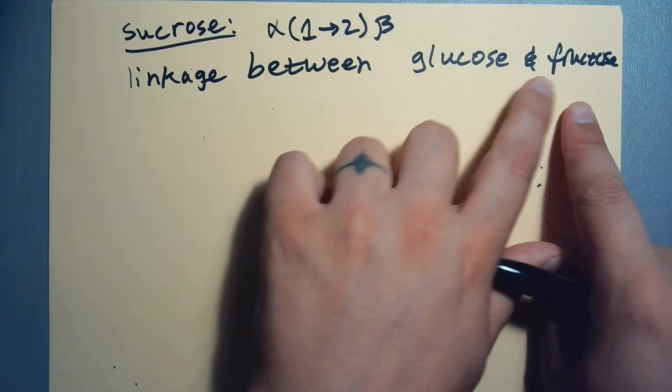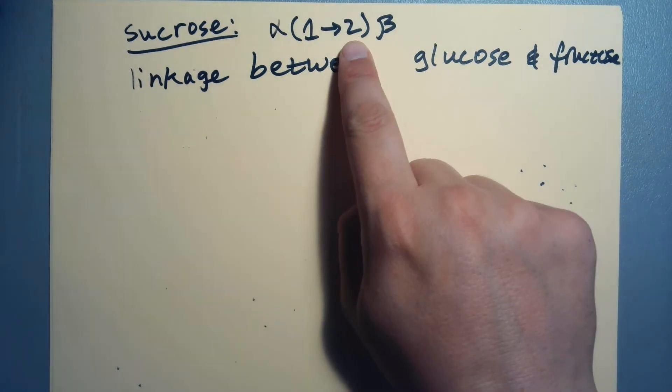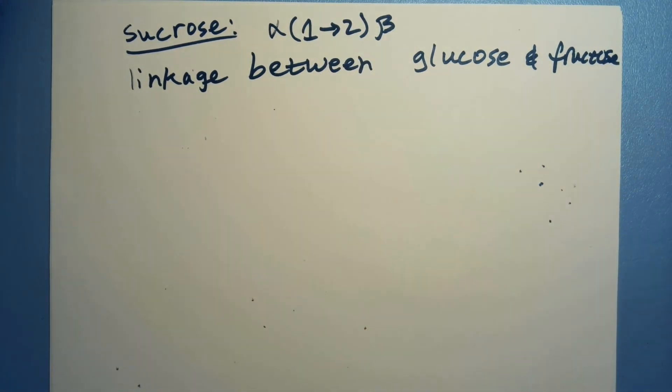So yeah, pause the video, take a shot. And then maybe you succeed. Maybe you meet terrific failure. Just great. Tremendous wave of failure. That's fine. We're going to go through it in a minute. Get a different marker that was dying on me. Alright. So what does this look like? Well, I've got to draw alpha glucose, right? It's got to be an alpha. Fructose has got to be in the beta form.